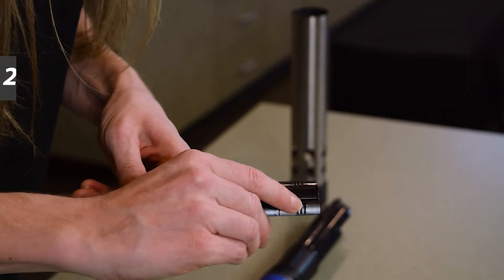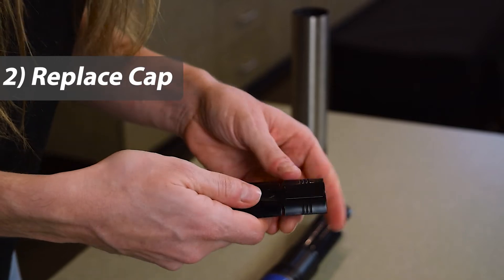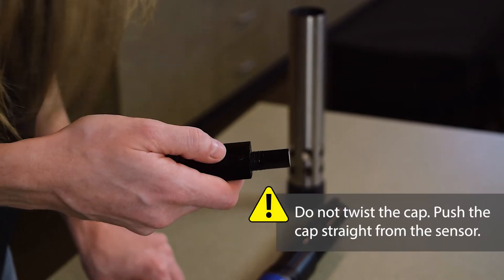Now you can see there's a little tab. You'll want to pull that up with your thumb and then push the old cap off of the sensor.